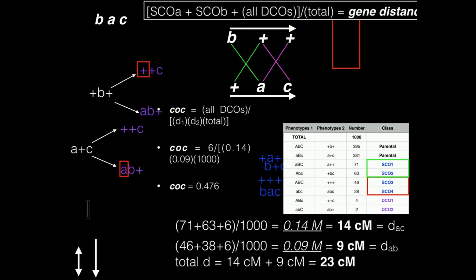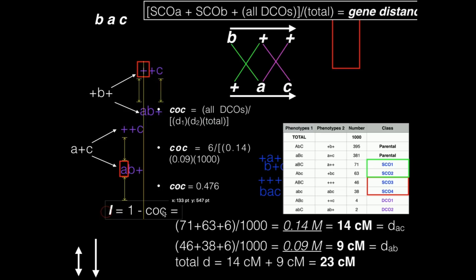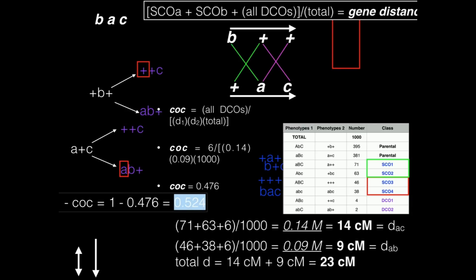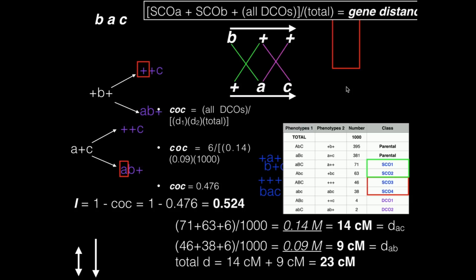There's only one last calculation to do: interference. The interference is given by 1 minus the coefficient of coincidence, which in this case is 1 minus 0.476, giving an interference of 0.524. Both the coefficient of coincidence and interference are unitless. So this covers all the calculations you'd need: individual gene distances, the total distance between the first and third genes, coefficient of coincidence, and interference.